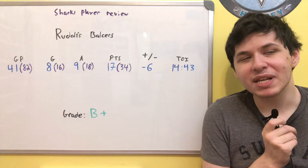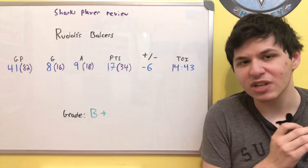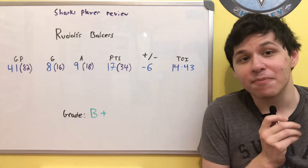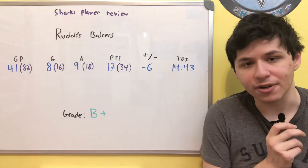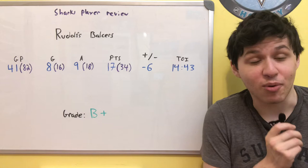So because of the massive differences of skills between certain players, not only on the Sharks, but just in the NHL as a whole, you cannot use the same exact rubric in grading players for Evander Kane as you do for someone like Rudolfs Balcers or Noah Gregor.